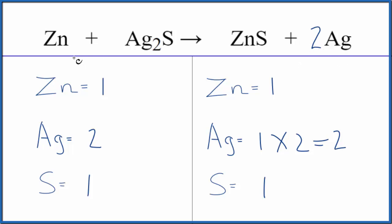This is Dr. B with the balanced equation for Zn plus Ag2S, zinc plus silver sulfide. Thanks for watching.